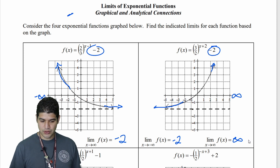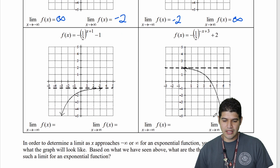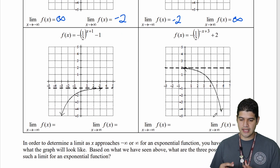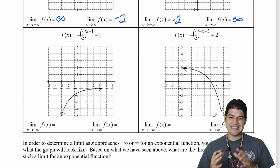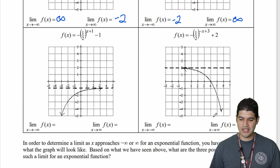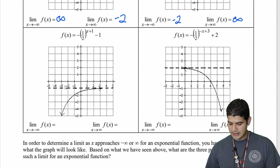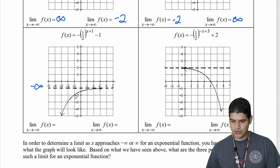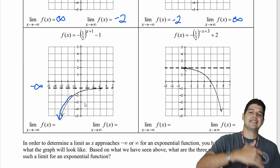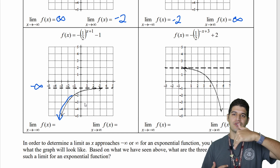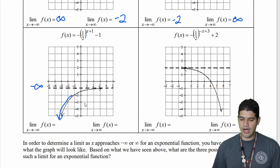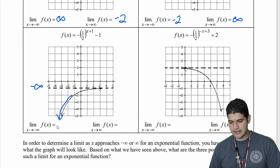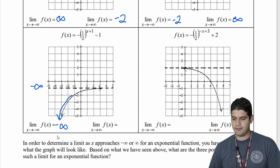Let's go down to our next two examples. The limit of f(x) as x approaches negative infinity: as I'm going to the left and reading the graph on the left side, the y values keep going down. Since they're going down, we're going to say it is going down to negative infinity.